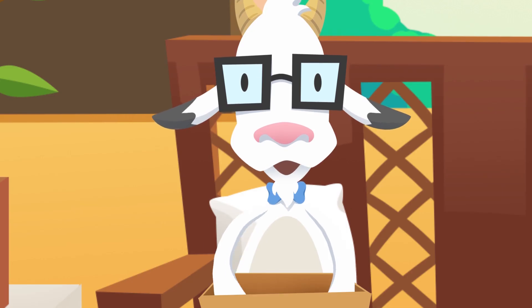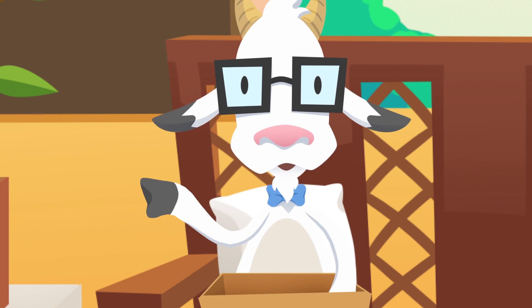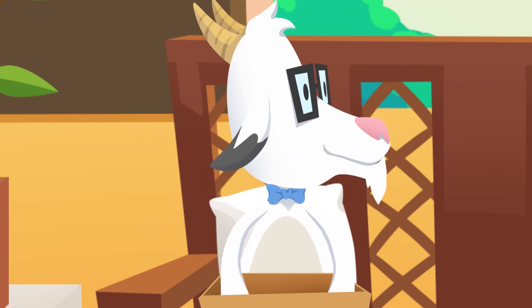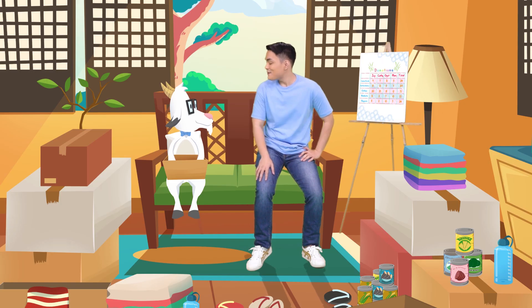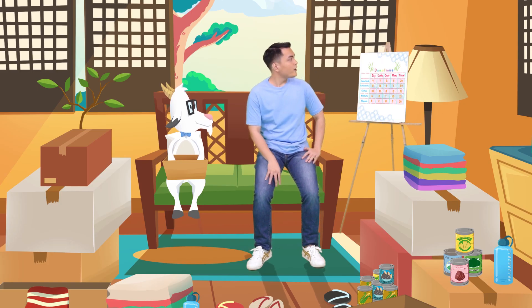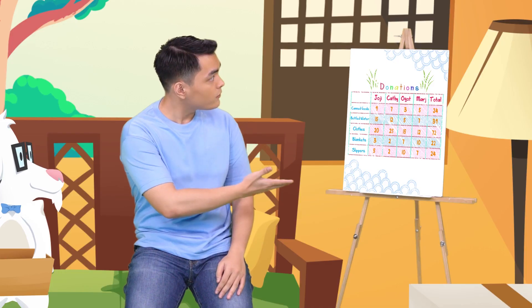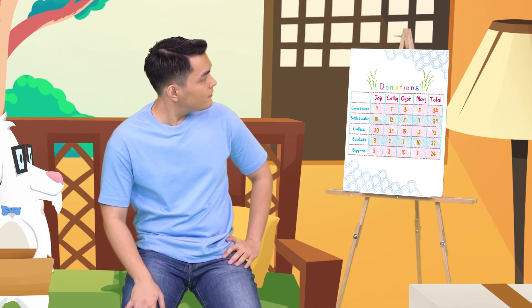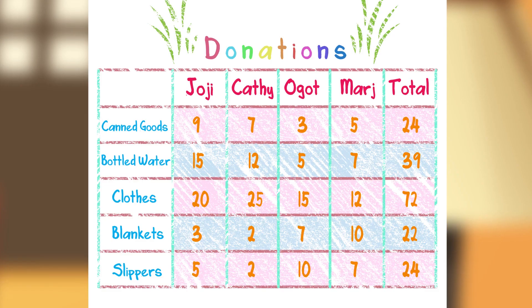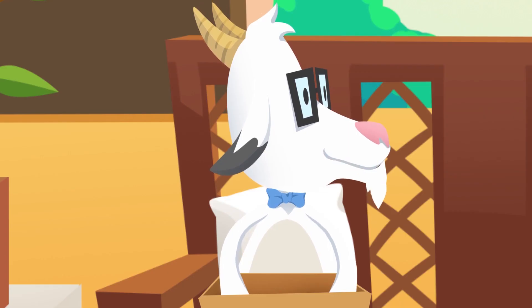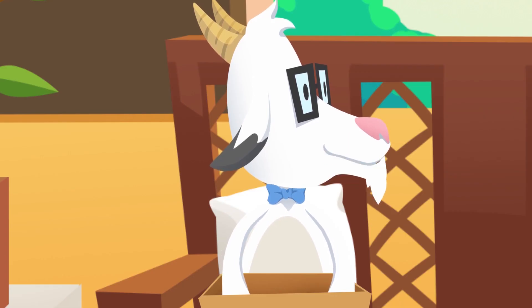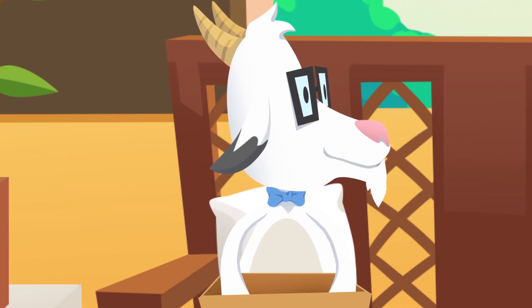We donated canned goods, blankets. What else did we donate, Joji? Don't worry, I already put them all in this table. This is good, Joji. This will help us see how many items we donated.